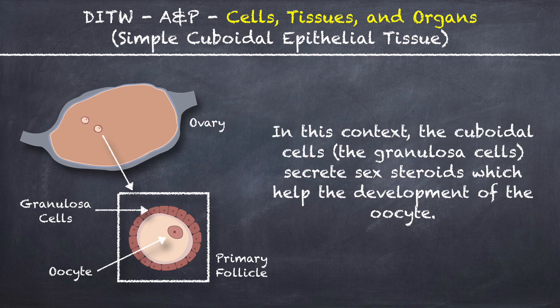In this context, the cuboidal cells, also known as the granulosa cells, secrete sex steroids which help the development of the oocyte.